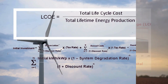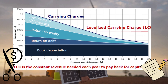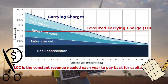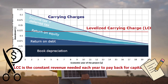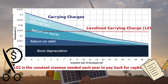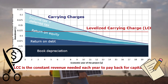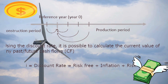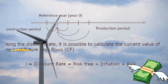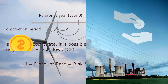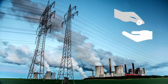Beyond these upfront and operational costs, power plants also have carrying charges. These are the annual costs associated with financing the plant, including interest on loans, insurance, taxes and depreciation of the plant's assets. Together, all of these costs contribute to the plant's total life cycle cost, which accounts for every dollar spent from the start of construction to the end of the plant's useful life.